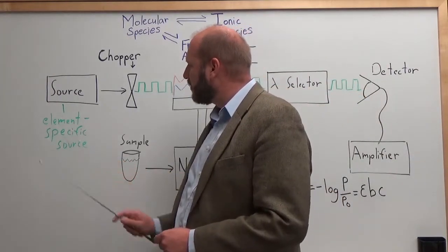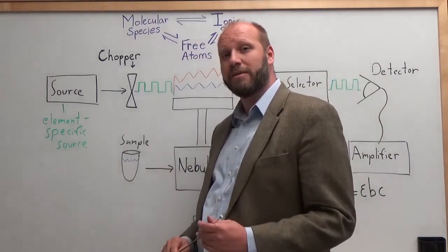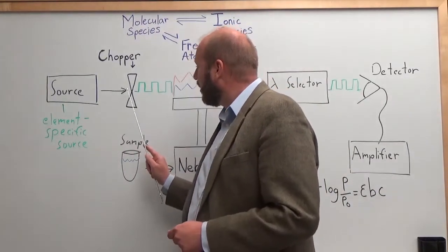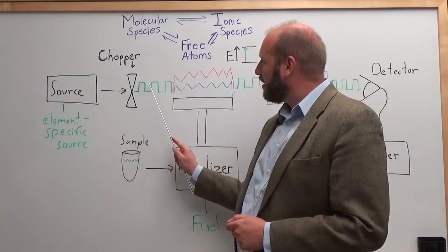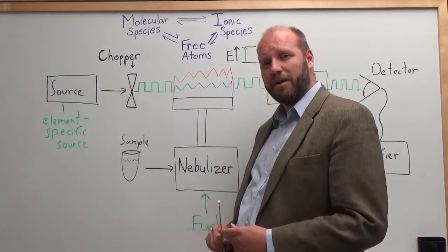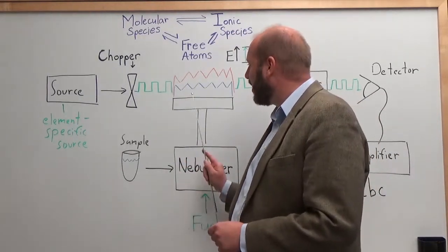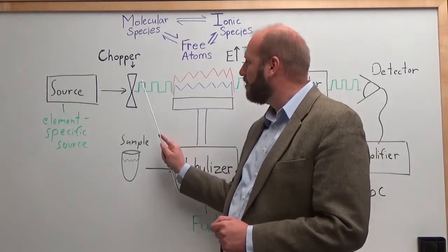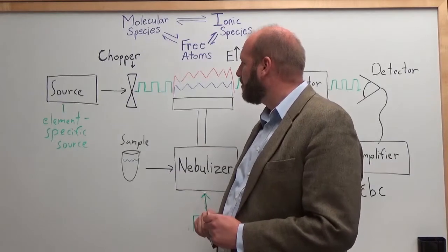So, if we look at our element-specific source, it has one wavelength of interest that we want to measure the absorption from. We put it through a chopper and what the chopper does is have that light turn on and off at a given rate. We turn it on and off because our flame is a light source itself and we need to be able to tell when we're measuring light from our sample versus from the flame.